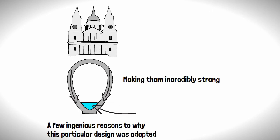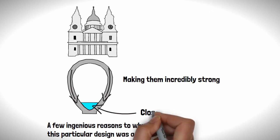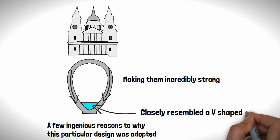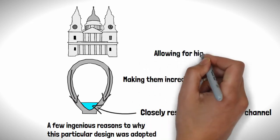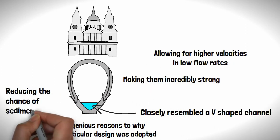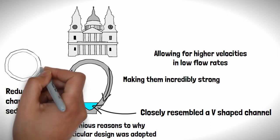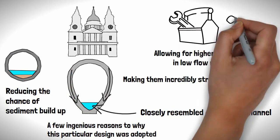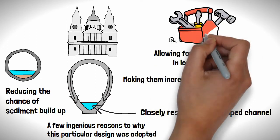The second reason was the top of the egg, or the bottom in this case, closely resembled a V-shaped channel, allowing for higher velocities in low flow rates, reducing the chance of sediment build-up at the bottom of the sewer compared to a circular pipe, lessening the amount of maintenance that would be required.